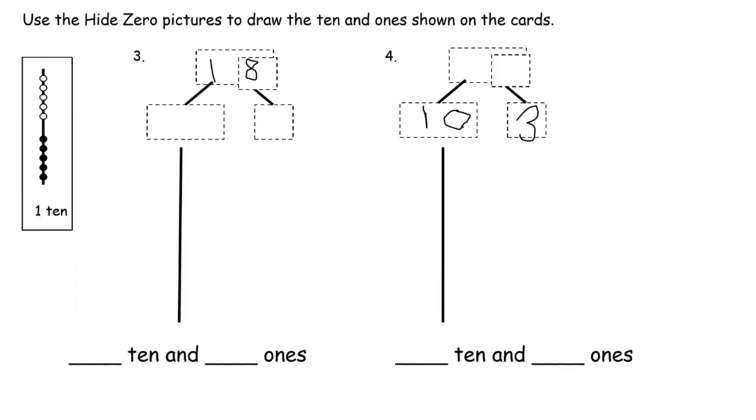Now we're using hide zero pictures to draw the 10 and 1s shown on the cards. So here's a group of 10, 18. So a 10 should look like this, 1, 2, 3, 4, 5, 6, 7, 8, 9, 10.